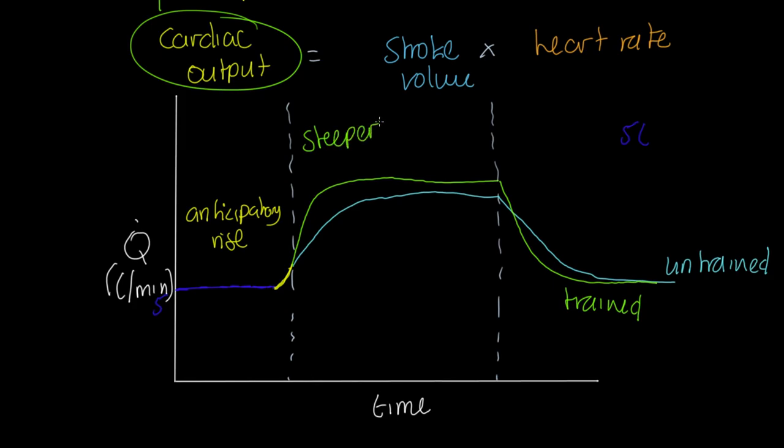They increase heart rate and stroke volume faster. Notice their exercising cardiac output is higher than the untrained athlete, and their recovery is quicker—they're back to resting levels while the untrained is still recovering. So trained athletes reach exercise cardiac output faster, have higher cardiac output during exercise, and recover faster.